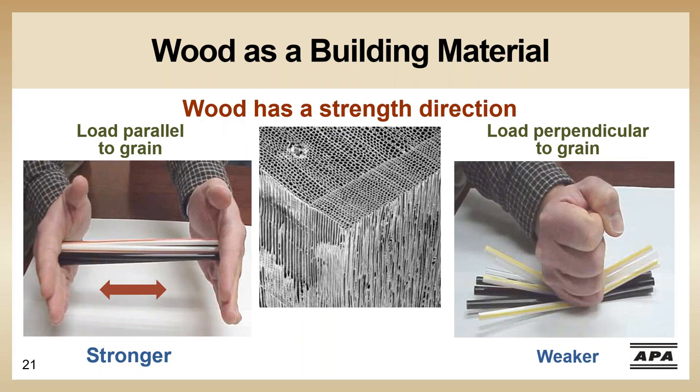Wood is primarily made from parallel tubular structures. On a microscopic level, we can closely model wood's behavior using a bundle of straws. When compression is applied parallel to the grain, that straw bundle is strong and efficiently resists crushing. However, if the load is applied perpendicular to the length of the straws — perpendicular to the grain — the straws crush more easily. A lower force is required to cause crushing, which is failure, perpendicular to the grain.